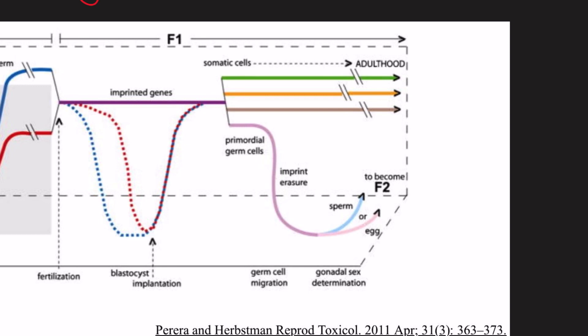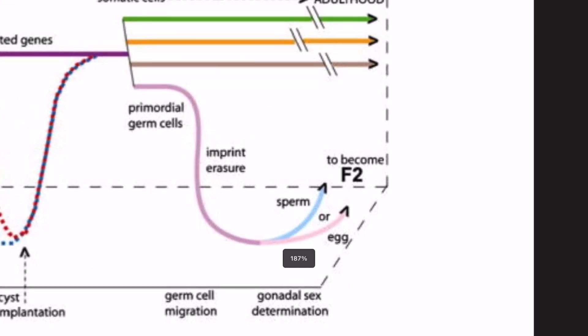During the sex determination stage of the embryonic development, the primordial germ cells undergo epigenetic reprogramming where parental imprinting is erased as the germ cells of the F1 individual mature. So that's the solid blue lines there.